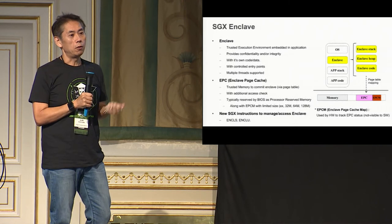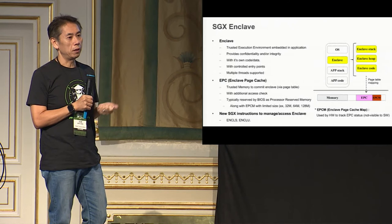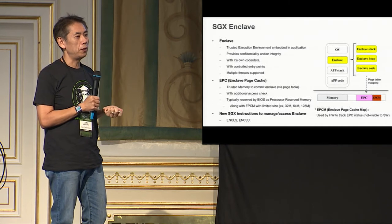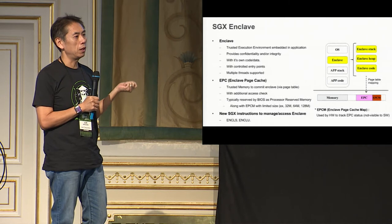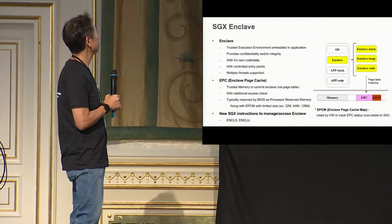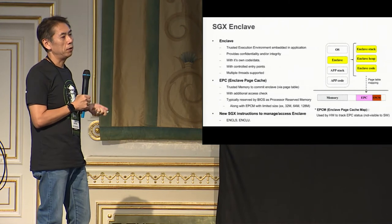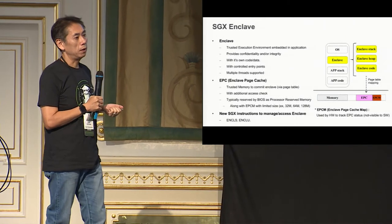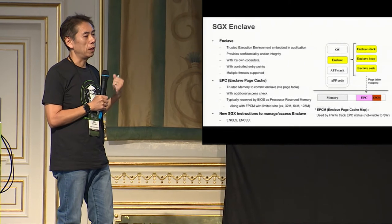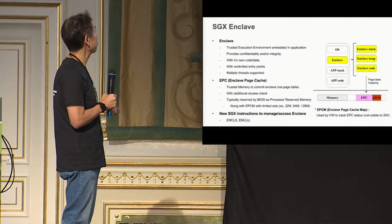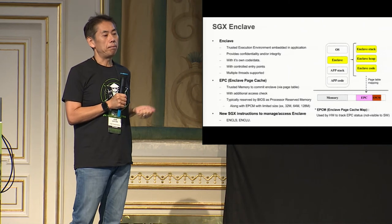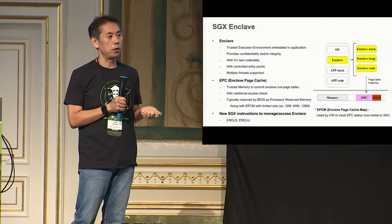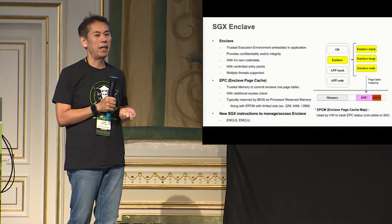All the data or code in the enclave will be protected by hardware. Even if the OS or VMM tries to see the content, it cannot. You can also have multiple threads there. To enter the enclave from an application, there is a new instruction set for enclaves. Enclaves are mapped to a special type of physical memory for encryption, called EPC — Enclave Page Cache.